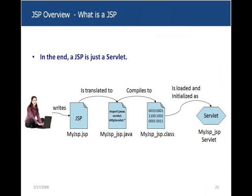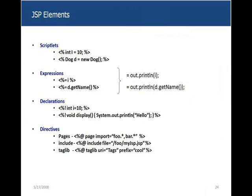When the first request for a JSP comes in, the container translates that JSP into Java, compiles it, and loads the compiled Java class as a servlet. From there on it's a servlet. JSPs are also servlets — you code in JSP and it ultimately becomes a servlet. Let's discuss some of the JSP elements. You can write Java code within JSP tags.